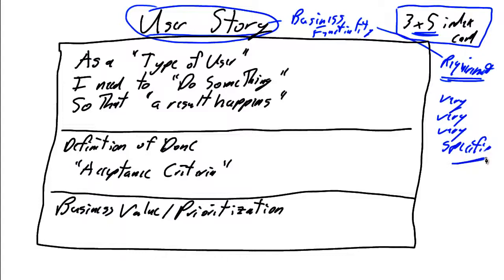To focus the development of our user stories, we typically have a refined, defined format: as a type of user — for example, as a warehouse clerk — I need to do something. I need to find a product in the warehouse, so that a result happens — I can ship the product to a customer.